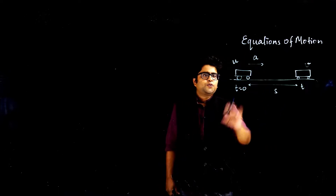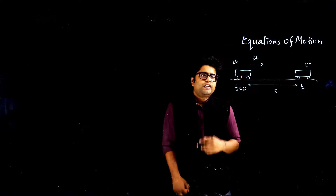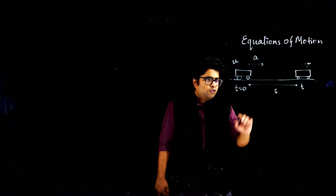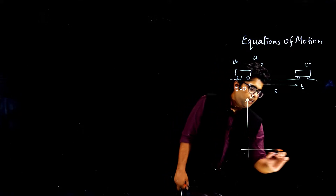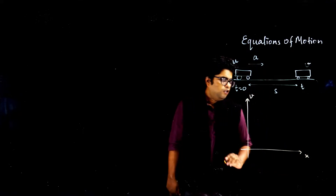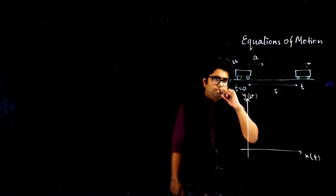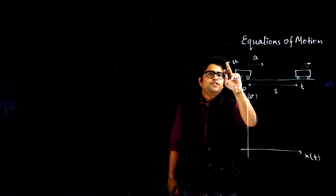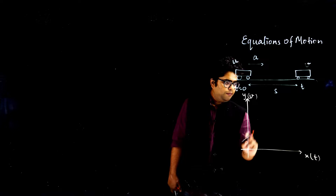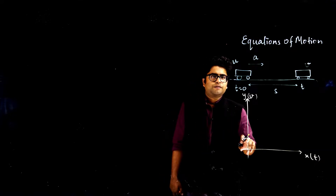If I want to plot this situation on a graph, how will the graph look? We are taking a velocity-time graph. We have velocity on the y-axis and time on the x-axis. At time t equal to 0, the velocity is u — it's not 0. So this point represents t = 0 with velocity u, and my graph will start from somewhere here.